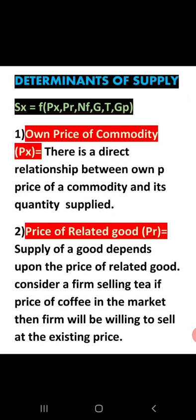Determinants basically means: what are the factors that determine supply? Number one: own price of the commodity. Don't forget that there is always a positive or direct relation between the own price of the commodity and its quantity supplied. There is always a positive relation between quantity supplied and price — if price increases, supply increases; if price decreases, supply decreases.